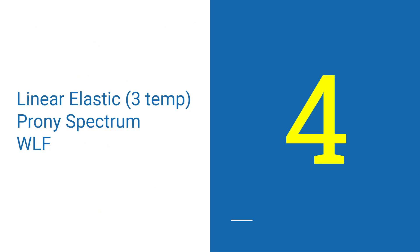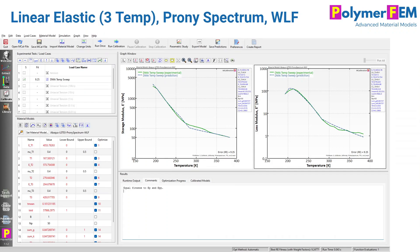The next thing to try is making the linear elastic response also temperature dependent, adding a Prony series spectrum with the WLF equation — so we have both elastic temperature dependence and Prony series relaxation temperature dependence. I calibrated this in MCalibration, selecting three temperature-dependence terms in the linear elastic model, combined with a Prony spectrum and WLF. Calibrating all of this at once gives a good prediction of the storage modulus, a good prediction of the loss modulus, and a nine percent relative error overall. That's quite nice.